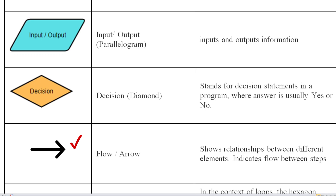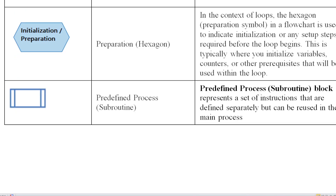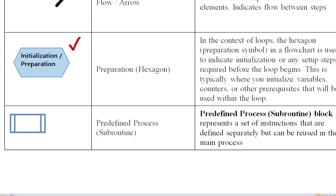Then another symbol is the Flow or Arrow symbol. For different shapes, you can use the arrow symbol to connect them. It indicates the flow between steps. Then another symbol is the Initialization or Preparation symbol, which is a hexagon-shaped symbol.